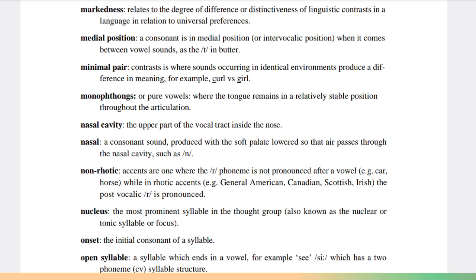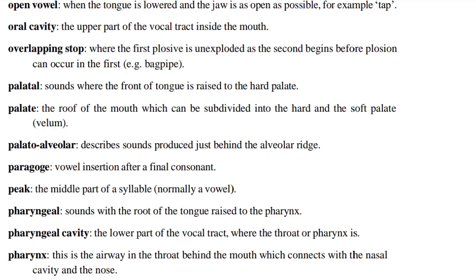Open syllable: a syllable which ends in a vowel, for example CV, which has a two-phoneme CV syllable structure. Open vowel: when the tongue is lowered and the jaw is as open as possible, for example tap. Oral cavity: the upper part of the vocal tract inside the mouth.